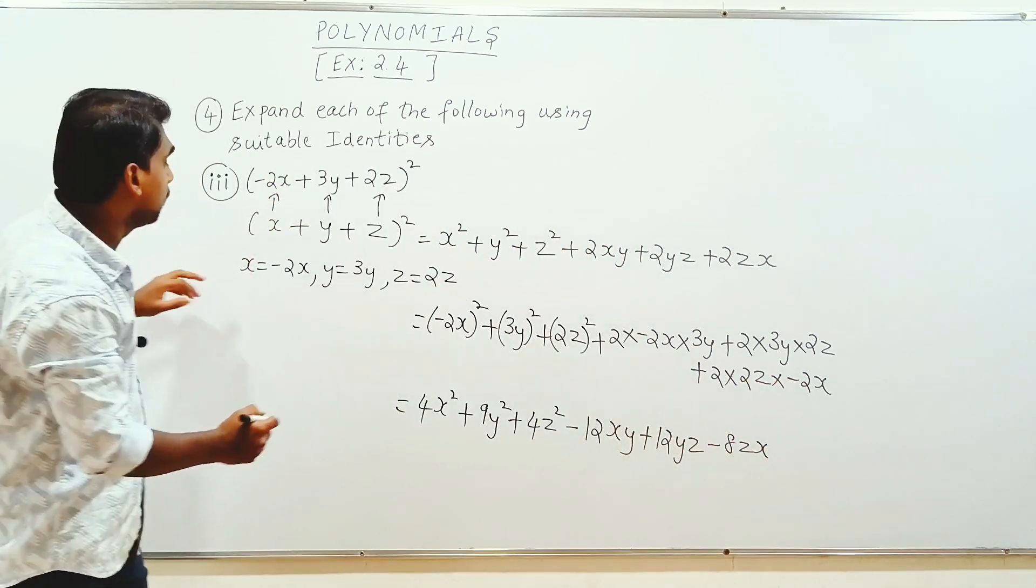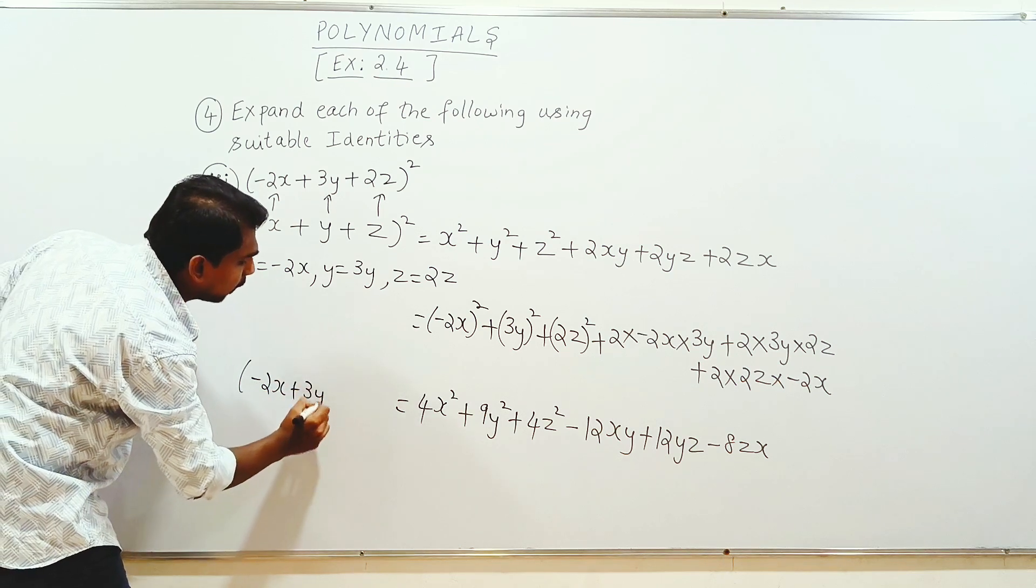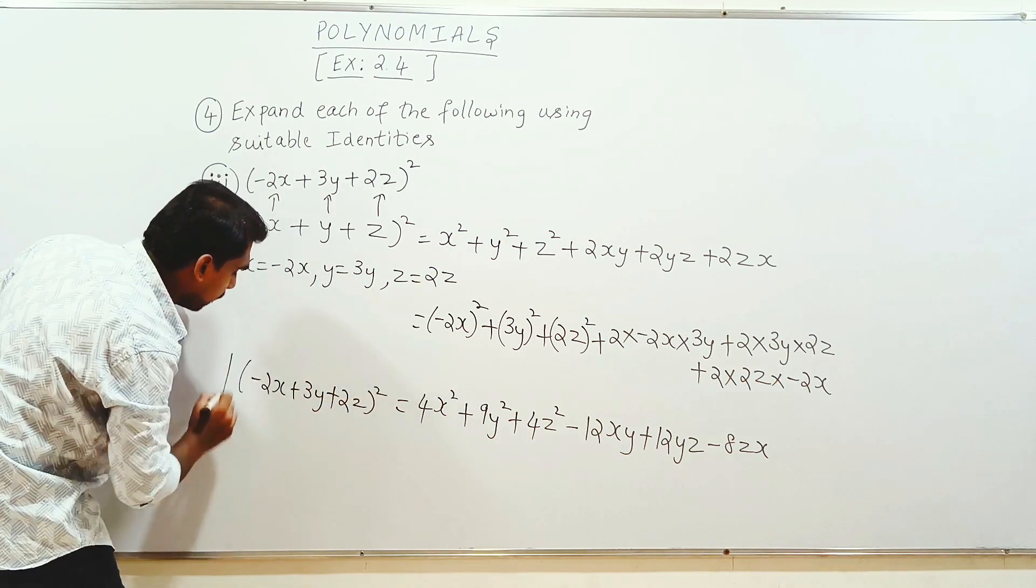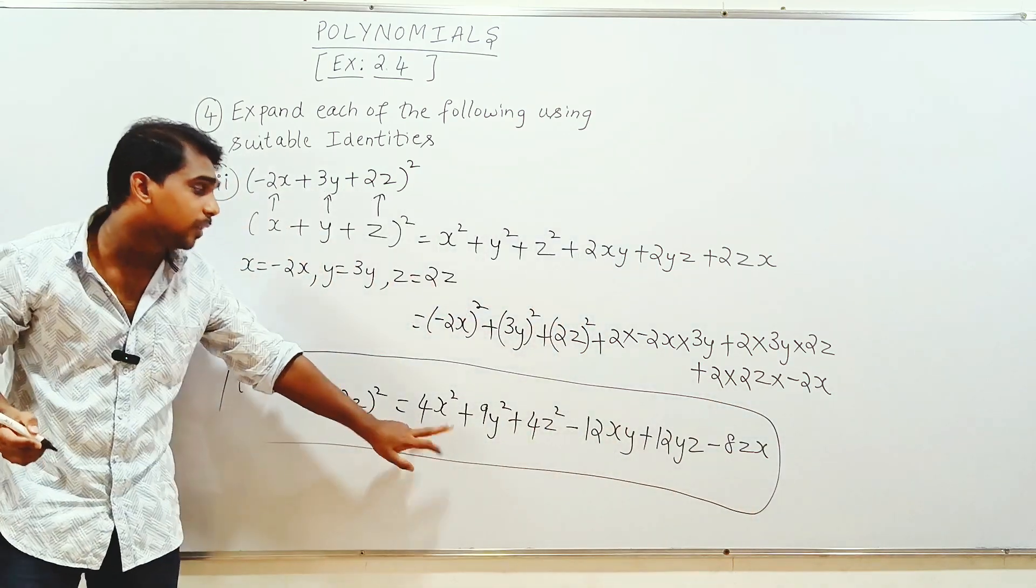The question minus 2x plus 3y plus 2z whole square. Answer is done. This is the answer.